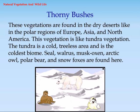Thorny bushes are found in dry deserts and polar regions of Europe, Asia, and North America. This vegetation is similar to tundra vegetation. The tundra is a cold, treeless area and is the coldest biome. Animals such as seal, walrus, musk oxen, arctic owl, polar bear, and snow foxes are found here.